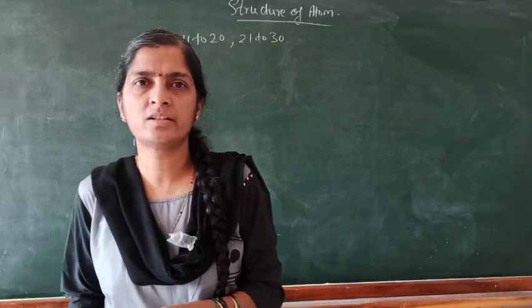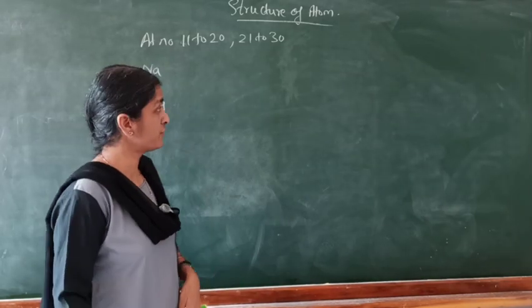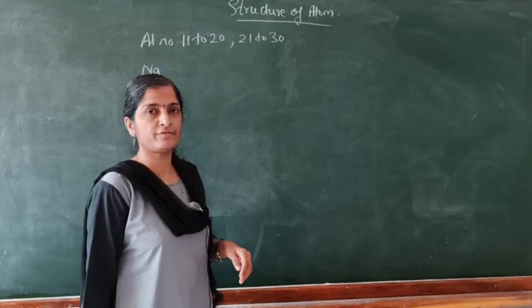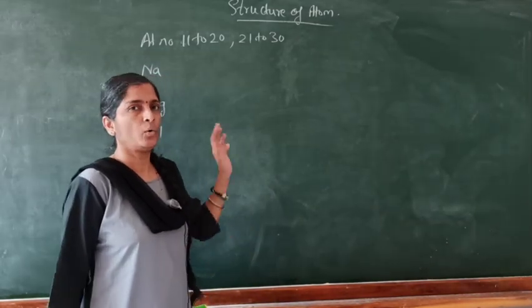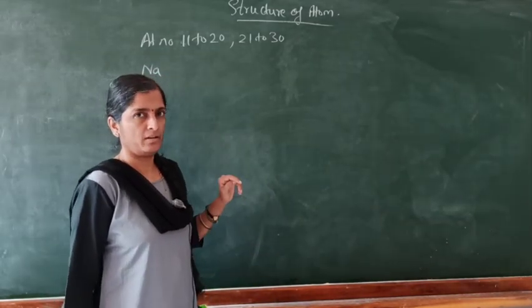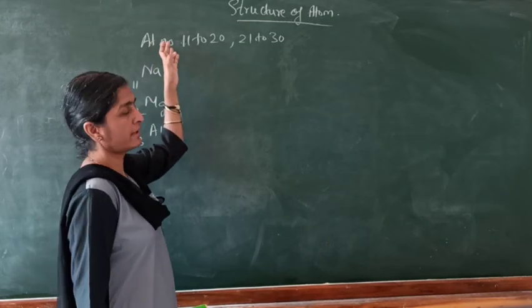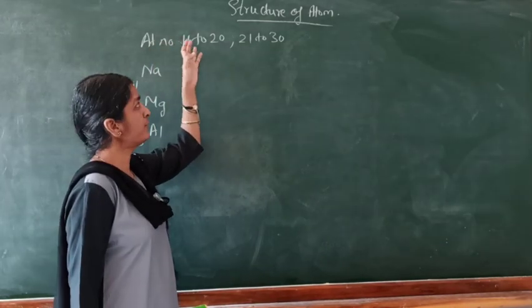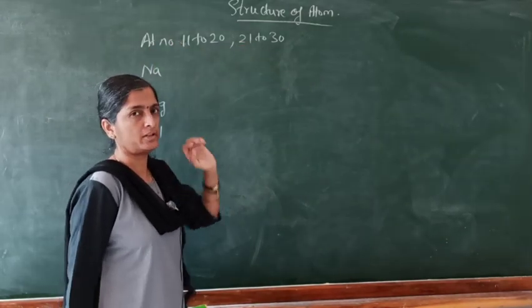So, students, in the last class yesterday, we were discussing about the electron configuration of elements from atomic number 1 to 10. Now, we move to elements with atomic number 11 to 20 and 21 to 30.